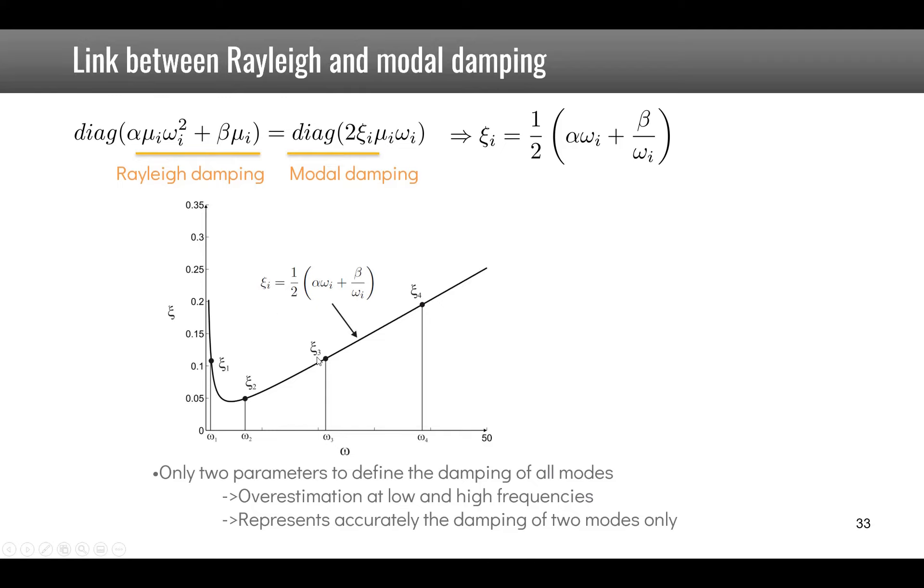Even when there is damping, it is possible to project the equations of motion onto the basis of real mode shapes and still obtain n independent equations to solve. Let's illustrate this with our two DOF system.